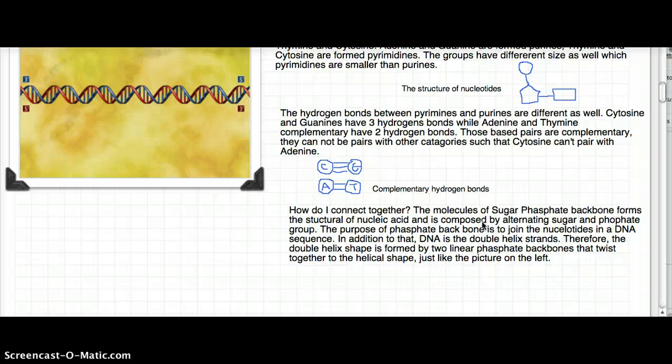In addition to that, DNA is a double helix strand. Therefore, the double helix shape is formed by two linear phosphate backbones that twist together to the helical shape, just like the picture.